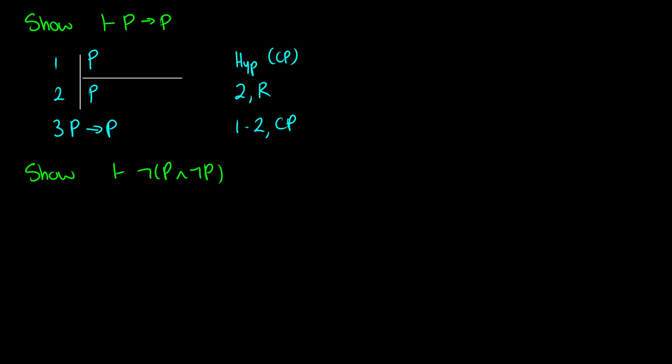Notice there's no line to the left of this. In our other proofs we usually have some assumptions listed on the left, and then we end up with something at the end — that's our consequent. The line on the left means we have assumptions we used to get that consequent. But here, when we close the sub-proof, we don't have any assumptions to begin with. So P→P stands on its own — it's the theorem.